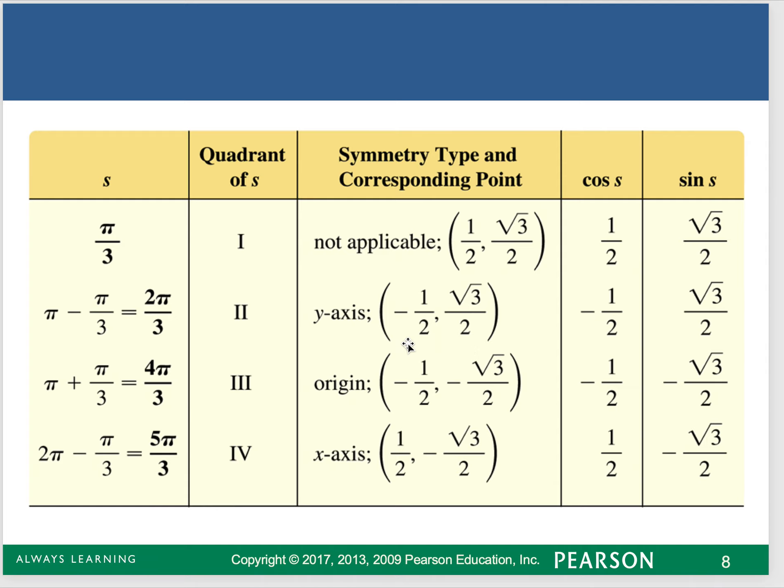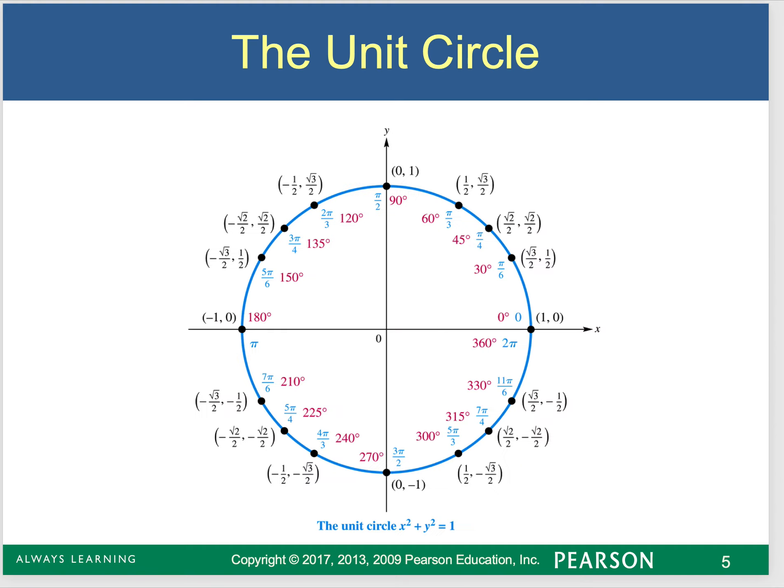Cosine is my x value divided by 1, so it would be just negative 1 half. This is my y value, and my sine is always my y value. So we're not having to build these triangles. We're going back to this image, and this is where those points are coming from.